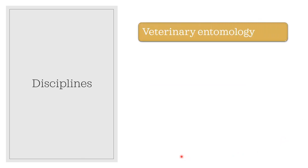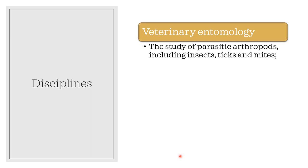There are three disciplines under veterinary parasitology. The first one is veterinary entomology, which deals with the study of the parasitic arthropods, including insects and mites.